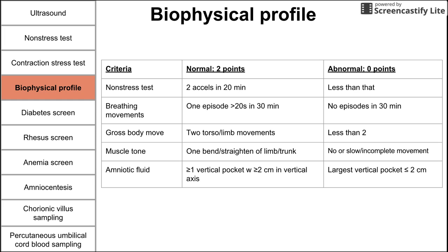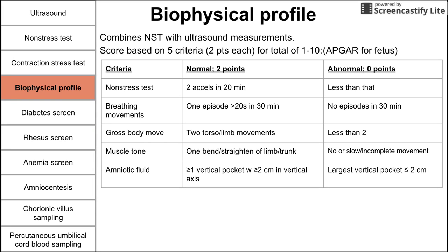Next up is the biophysical profile. The biophysical profile essentially combines the non-stress test with several other ultrasound measurements. The score is based on five criteria, and you can get two points for each criteria for a total score of up to 10 points. This is essentially analogous to the APGAR scores, but for an unborn baby — APGAR is for a newborn, whereas the biophysical profile is for a fetus.